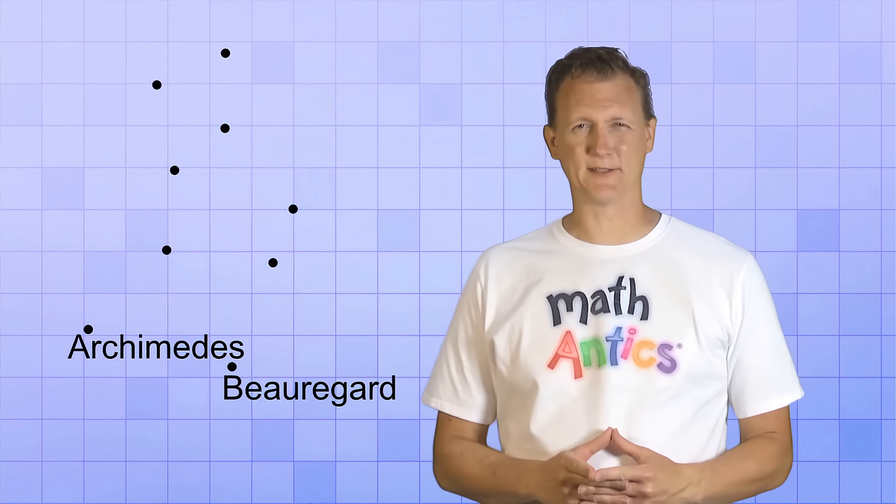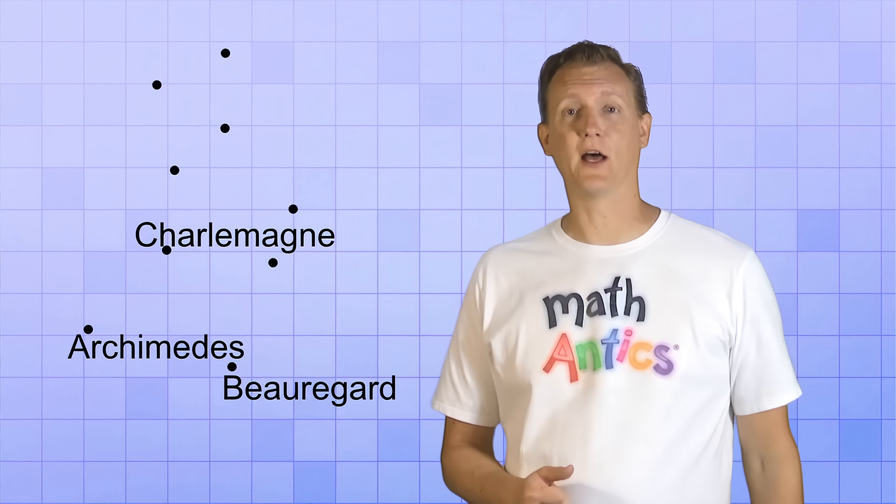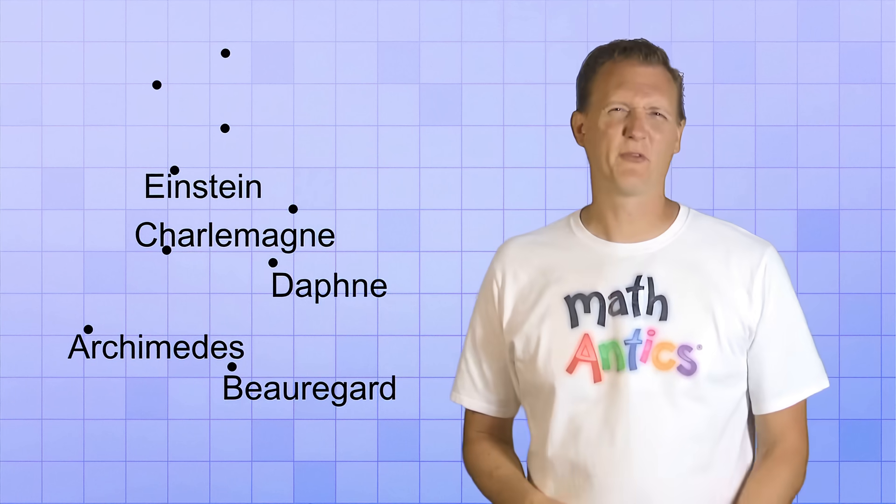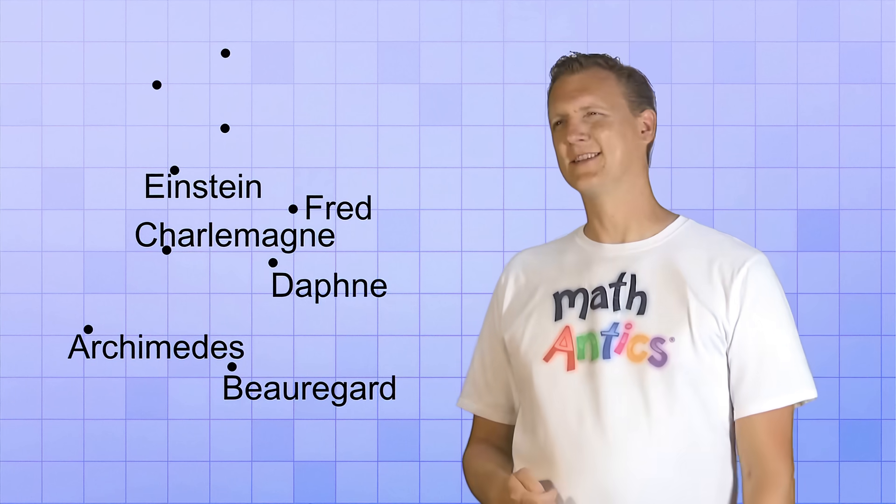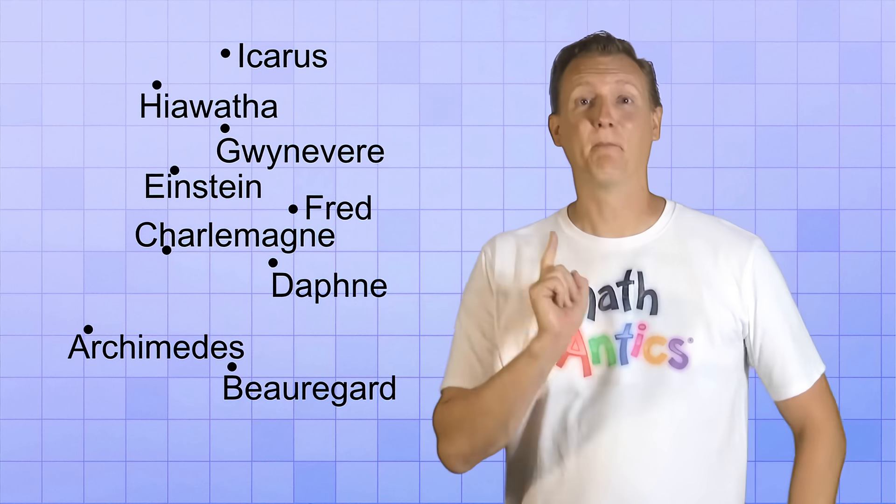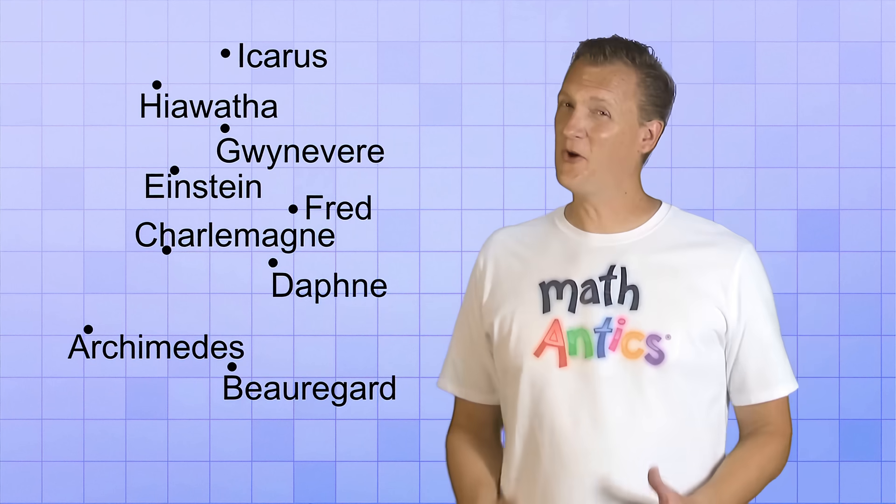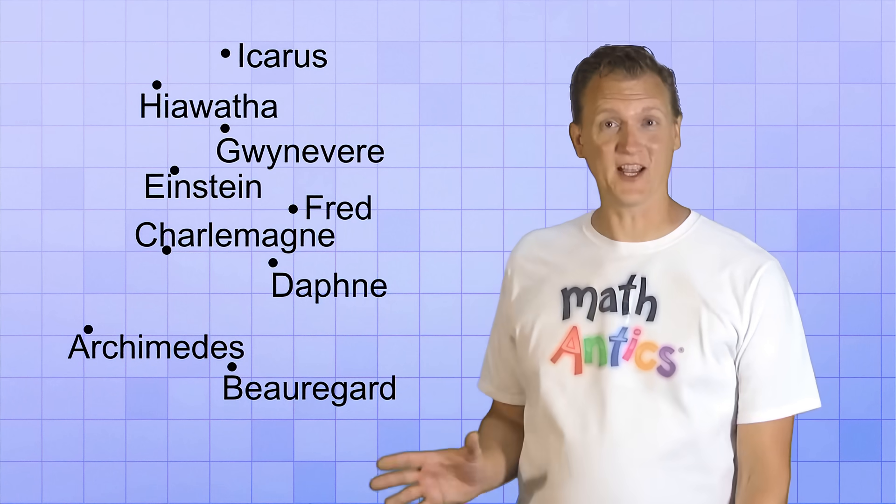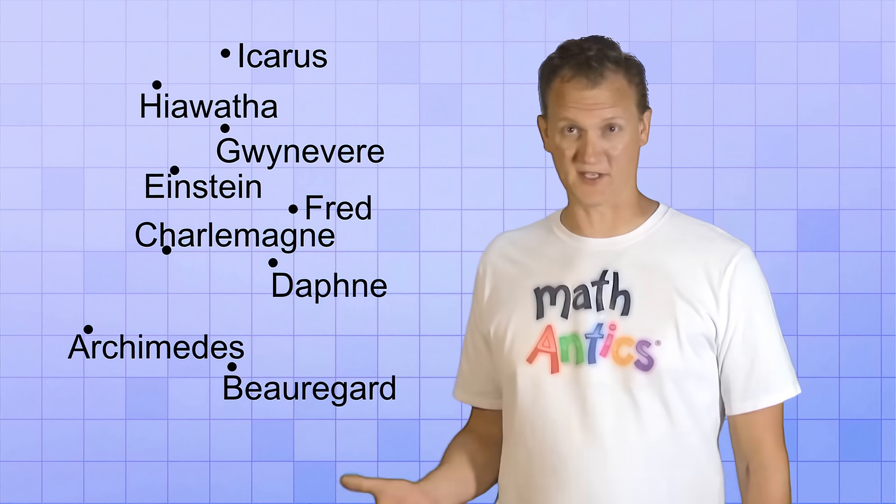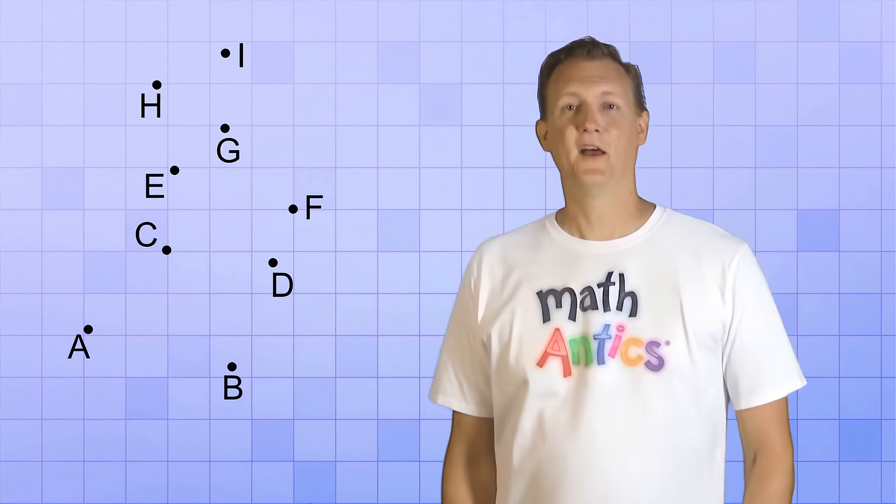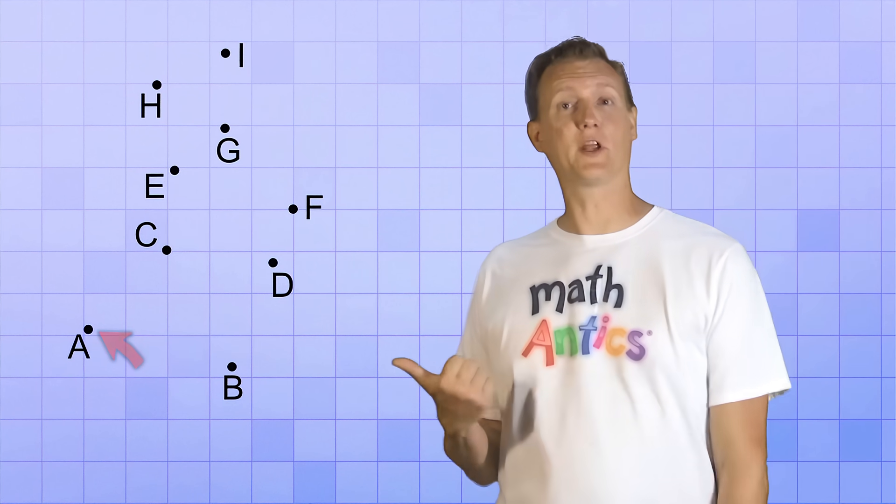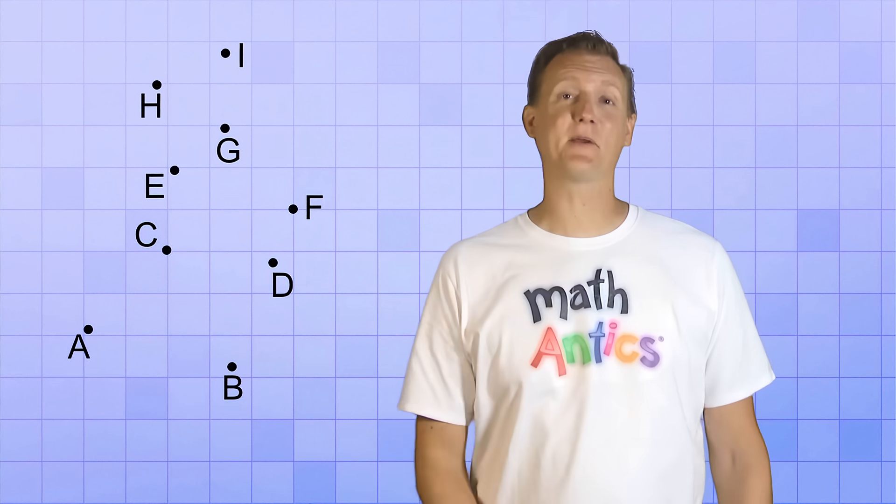That'd be good. Maybe Charlemagne? How about Daphne and Einstein? Let's see, Fred and Guinevere, Hiawatha, and Icarus. Perfect! You know, on second thought, those names are kind of long and complicated. Why don't we just use the first letters of each name instead? There! Now if I say, look at point A or look at point B, you know exactly what I'm talking about.